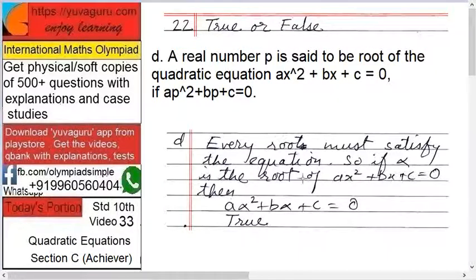Every root must satisfy the equation. So, if alpha is the root of the equation, then a alpha squared plus b alpha plus c should be equal to 0. Or if p is the root in our case, then ap squared plus bp plus c should be equal to 0. So, that is why it is true.